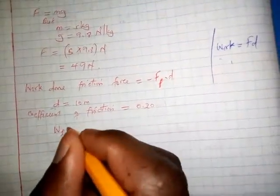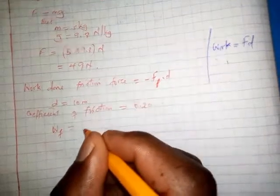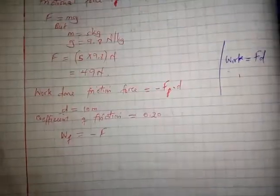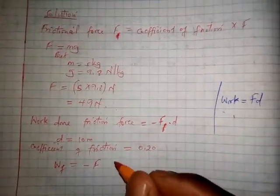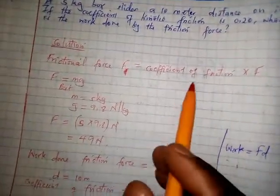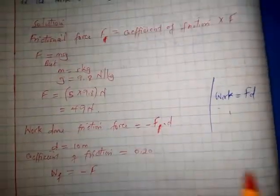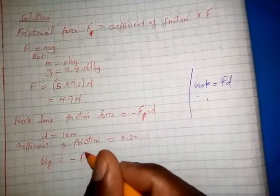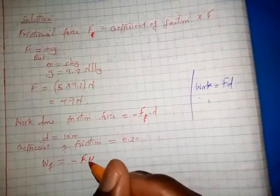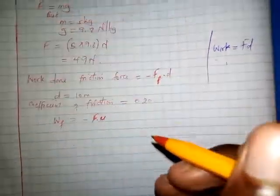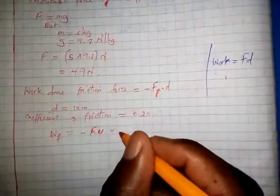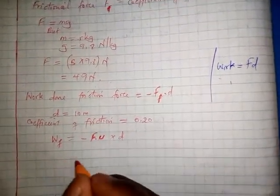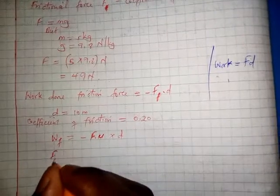Work done by the friction force equals negative f times mu times d. The friction force equals the coefficient of friction, represented by mu, times the normal force. So we have friction force equals negative mu times F, then multiplied by the distance d.